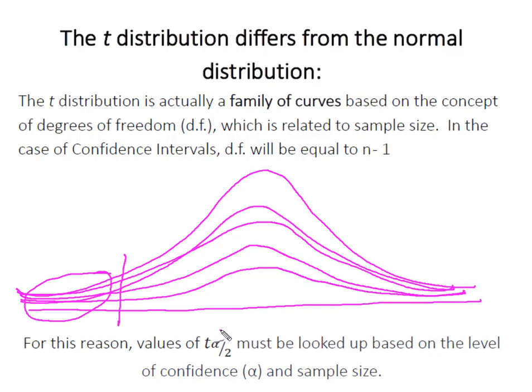For that reason, our values of t alpha divided by 2 are going to have to be looked up in a t distribution table based on two things: our level of confidence or our value of alpha, and our sample size of n.